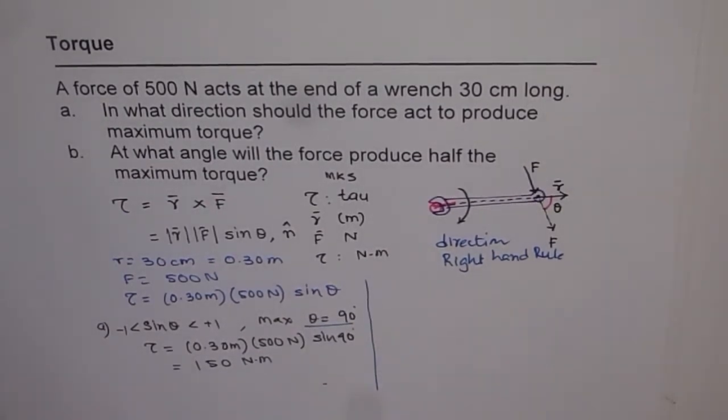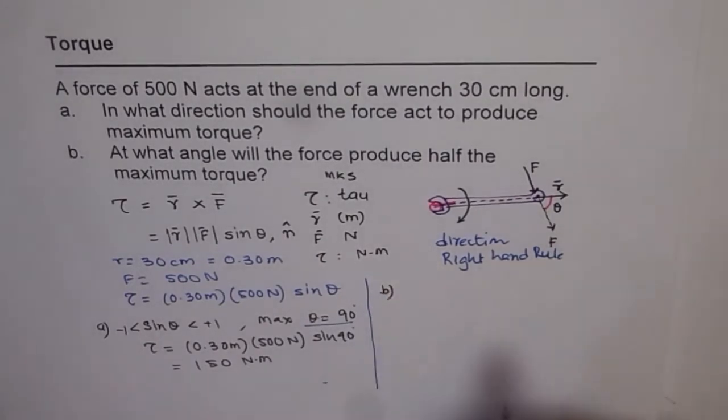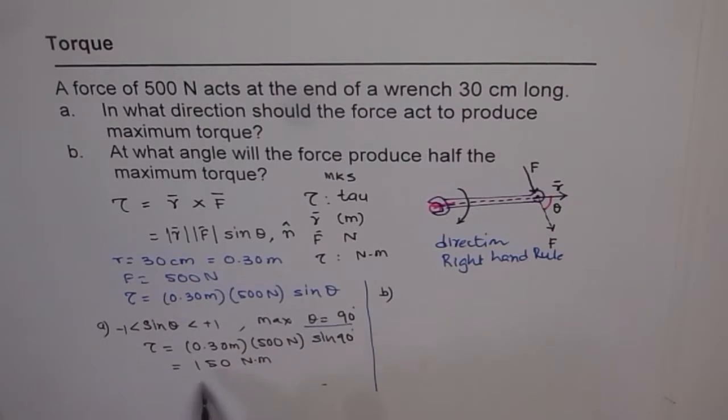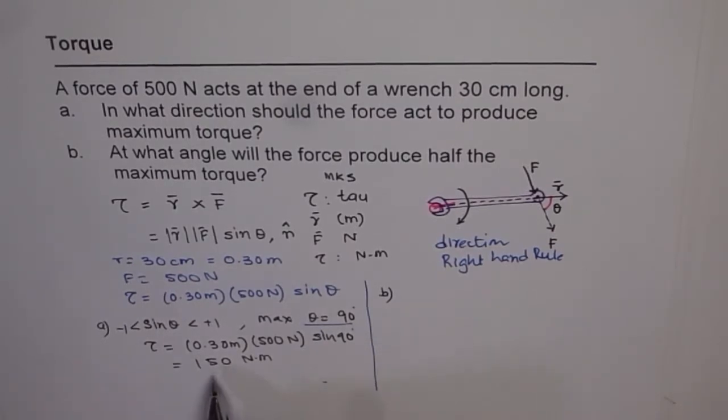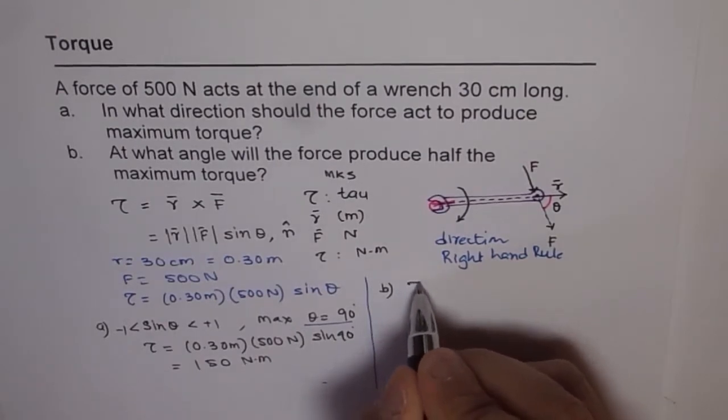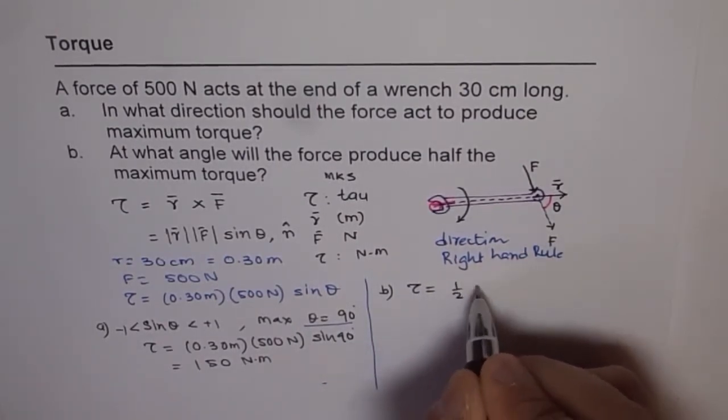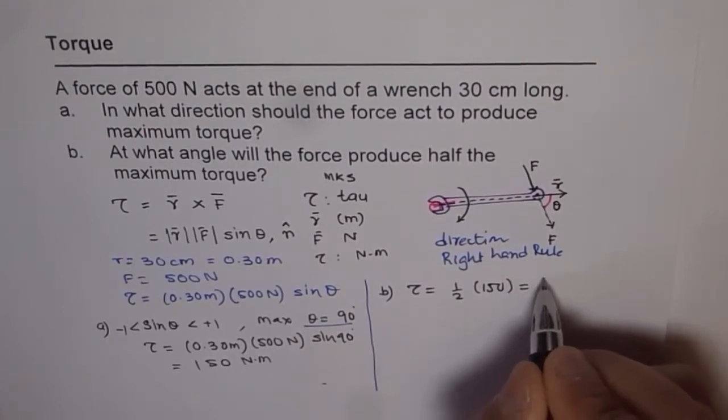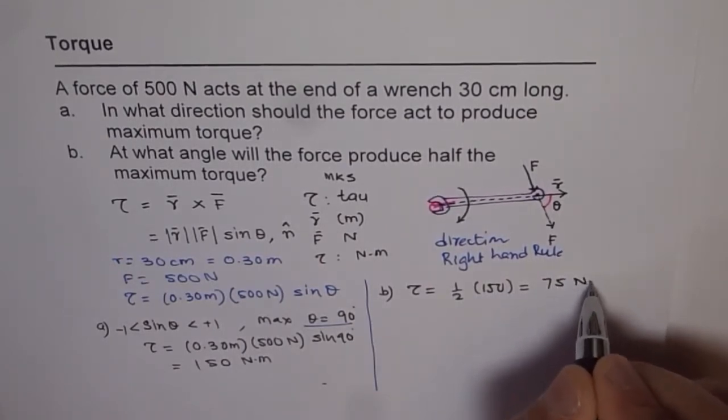Part B: at what angle will the force produce half the maximum torque? Maximum torque was required. We have already found that to be 150. Half of 150 is 75 newton meter. We need a torque which is half of 150.